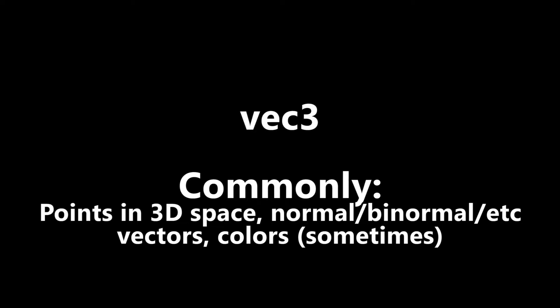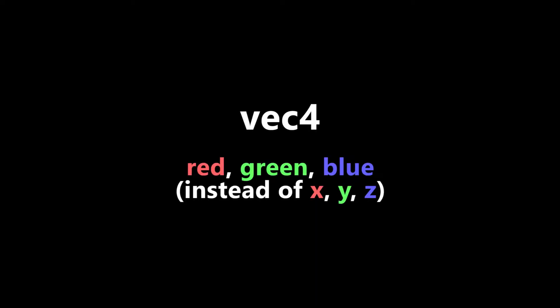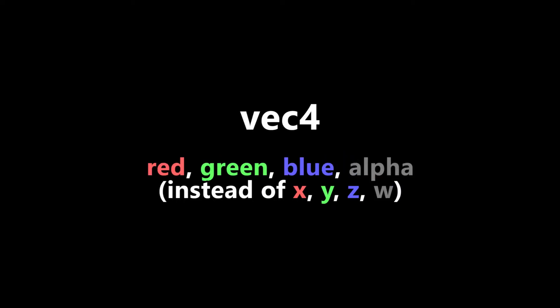Vector 3s are also sometimes used to represent colors with red, green, and blue components instead of X, Y, and Z. But far more often when it comes to colors, you will be using instead a 4D vector or a Vect 4. Vect 4s are what you usually see when it comes to colors in game dev and like graphics programming, but instead of just the usual red, green, and blue color components, you will also see them coming with an alpha color component which is the transparency which affects how the color is blended with other colors.